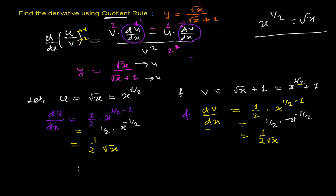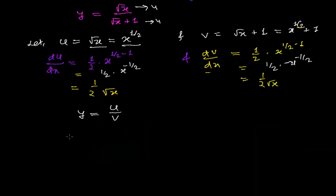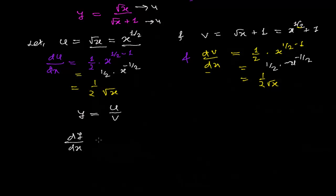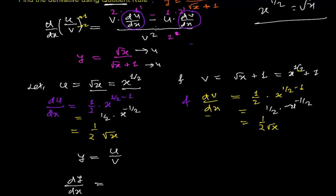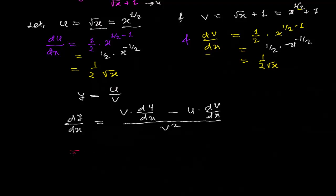Now let's find the derivative. Our function is y equals u over v, where u represents root x and v represents root x plus 1. Applying the quotient rule formula, dy/dx equals v times du/dx minus u times dv/dx, over v squared. So v equals root x plus 1, times du/dx...